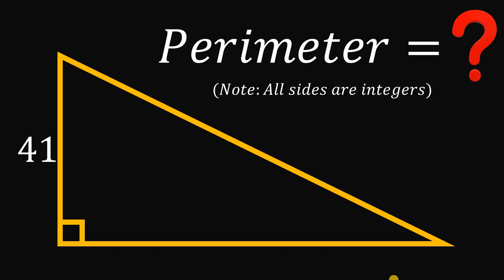For today's video we will answer a geometry challenge. Here's the question: given this right triangle with a side length of 41, our goal is to find the perimeter of this triangle given that all of its sides are integers. You can pause this video if you want to give this problem a try.